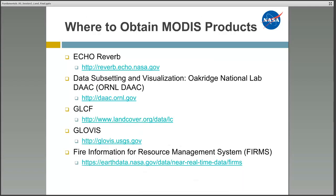In addition to providing information about MODIS, both EOSDIS and LPDAAC have many different datasets available for download. There are many places to obtain MODIS products, including ECHO Reverb, the MODIS land product subsets at the Oak Ridge National Lab DAAC, the Global Land Cover Facility, GloVis, and the Fire Information for Resource Management System — or FIRMS — which delivers global MODIS hotspots and fire locations in near real time.